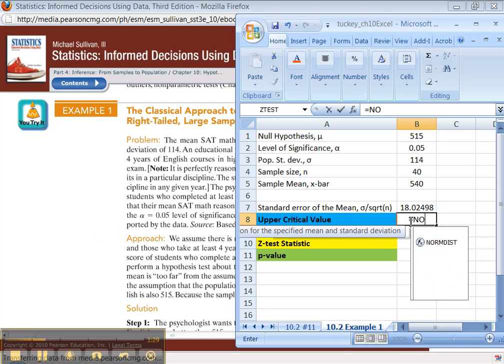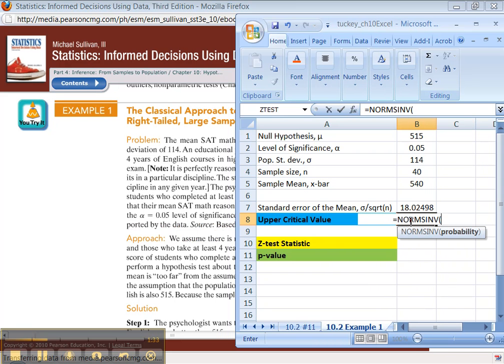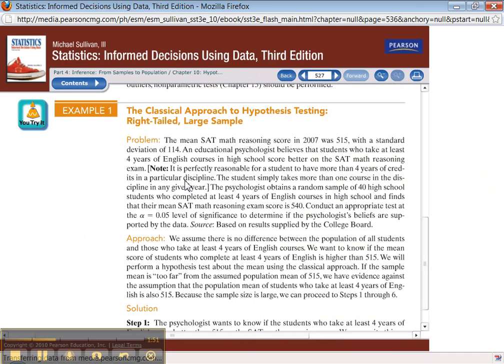Now let's think about this. We still need NORM.S.INV. Now for a left-tailed test, you take alpha. But since this is a right-tailed test, what you need is the probability that's to the left of the right-hand value. I know it's a little strange, but here, let me show you a picture.